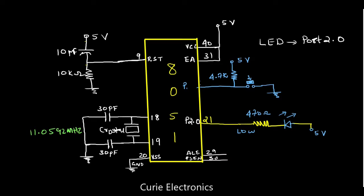I want to show you when an interrupt occurs, how the program control goes to the subroutine. For that, I am going to add one more LED. I will connect a current-limiting resistor — I have a 100 ohm, that's fine, it was working fine. Then one more LED. This one goes to 5 volt. This is a blue color LED. And the one we had in the last program was the red LED. So now we have two color LEDs: red and blue.